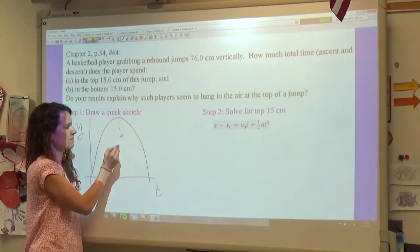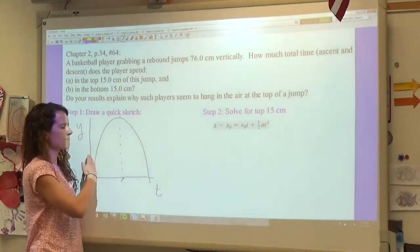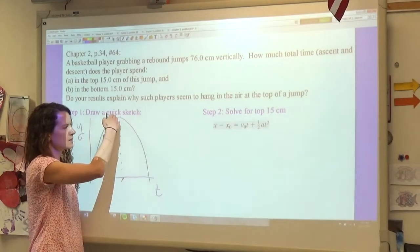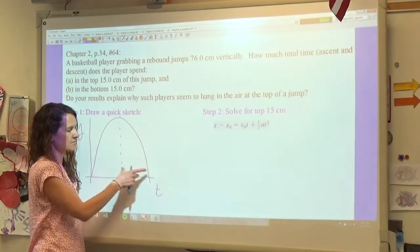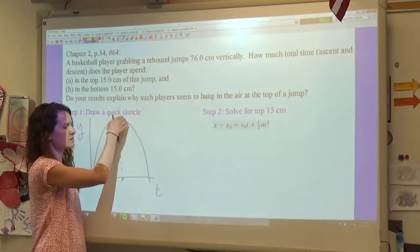We know this is projectile motion, which is important because we recognize that there's symmetry, meaning that what is happening on the first half when the player is traveling up is equal and opposite of what's happening on the second half. So it's the same amount of time. The velocities are all positive here and the same magnitudes as they're going down but negative on the way down.